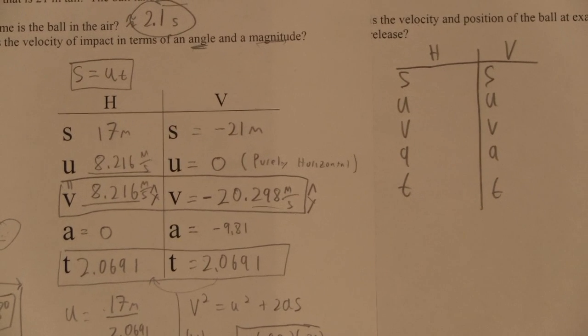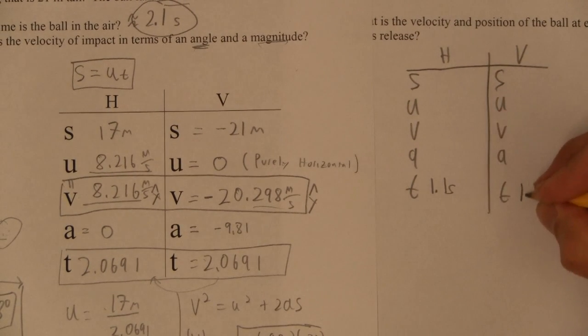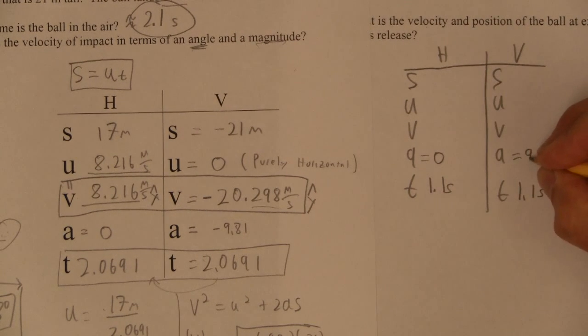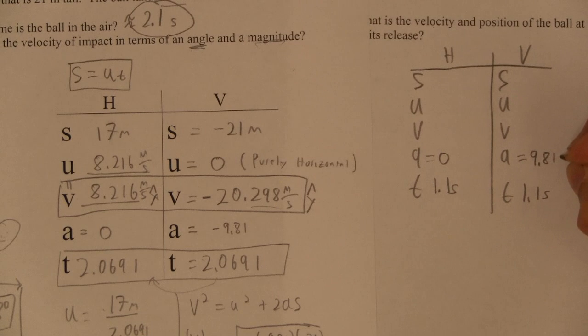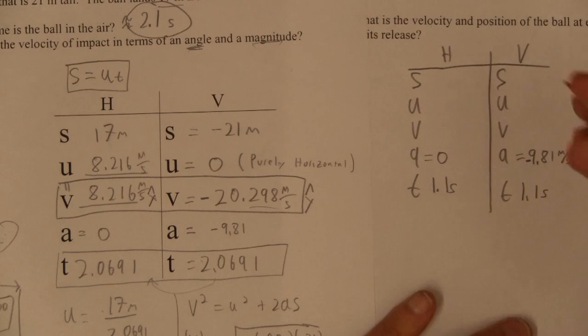And I think the 1.1 seconds goes in for our time, right? I think our acceleration here is zero. This is true for all projectile motion problems. Only that guy's negative, right?